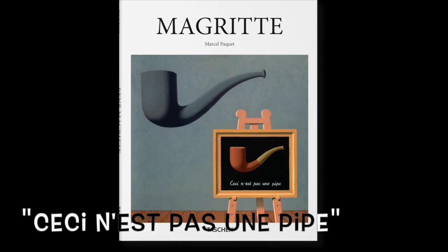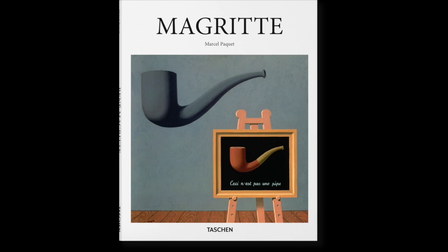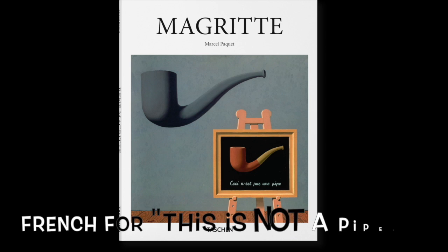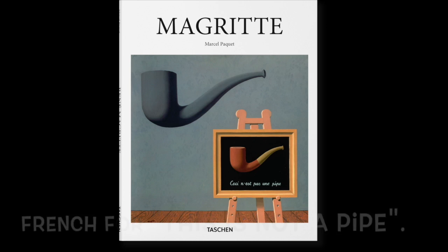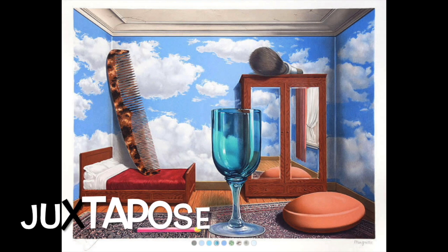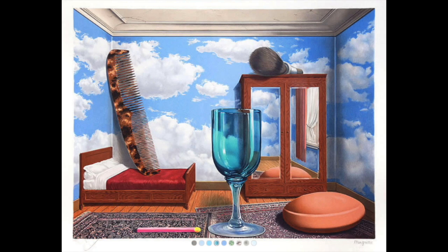Magritte called this painting 'Ceci n'est pas une pipe,' which means 'this is not a pipe.' Well, is it? Magritte was famous for putting elements together called juxtaposition — either they have very close similarities or are very different. In this painting, he had some fun, didn't he?